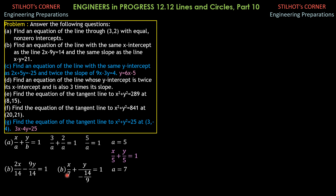So the expected equation is x minus y equals x1 minus y1. Since x1 is 7 and y1 is 0, we get x minus y equals 7 minus 0. Therefore, the required line is x minus y equals 7.